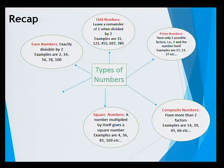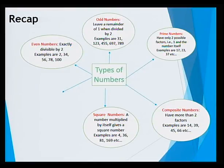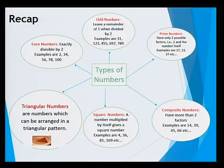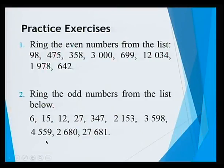Then we had a look at square numbers — a number which when multiplied by itself results in a square number. Examples: 4, 36, 81, 169. And the last type of number we looked at today was triangular numbers — numbers which can be arranged in a triangular pattern. We are going to end with some practice exercises, which you can try to do at home by yourself or with the help of your friends, teachers, or even your parents, just to help you work out these questions.